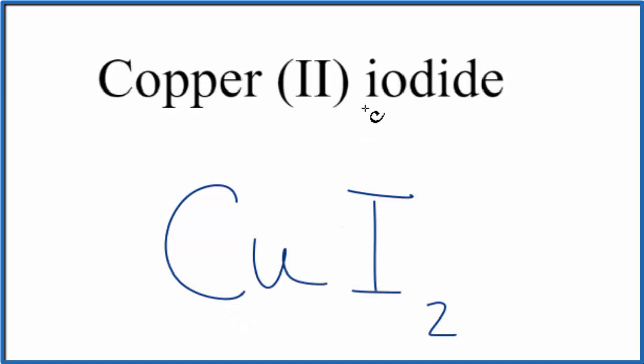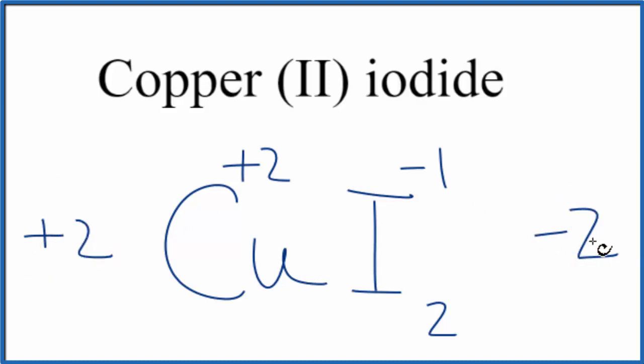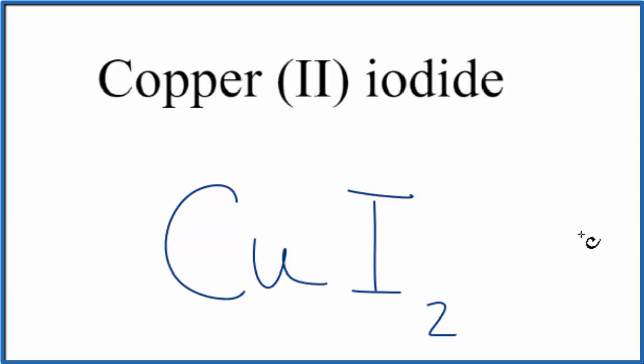Let's check our work though. We said copper 2+, so +2. Iodine -1. 2 times -1, that's -2. 1 times +2, we got +2. These numbers balance out, give us a net charge of 0, so this is the formula for copper(II) iodide.